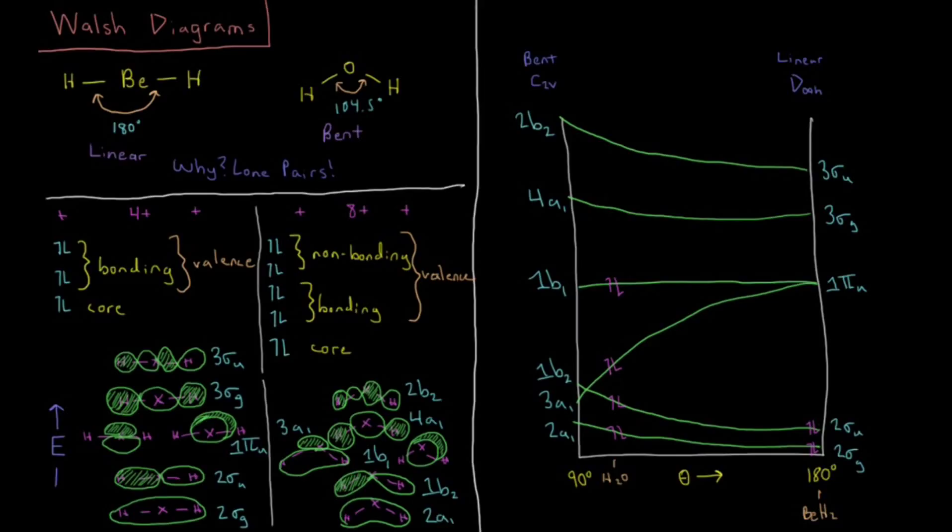In this video we're going to look at Walsh diagrams and try to answer the question of why BeH2 is linear and water is bent.